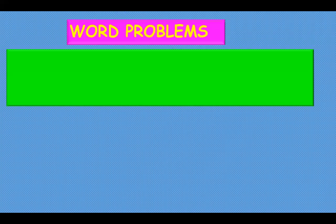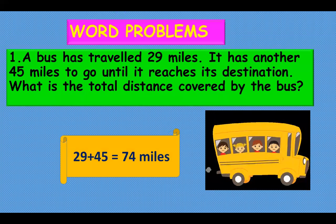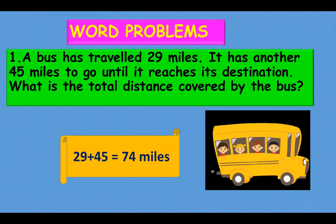Word problems. A bus has traveled 29 miles. It has another 45 miles to go until it reaches its destination. What is the total distance covered by the bus? Here we are going to do addition: 29 plus 45 equals 74 miles.